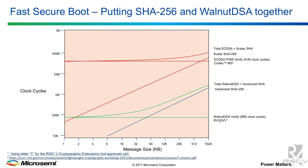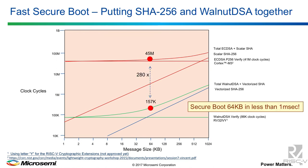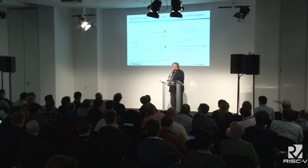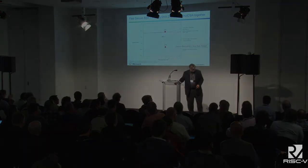Compared to a classical secure boot scenario, we can do the WalnutDSA signature in about 86,000 clock cycles. The SHA has been accelerated 36-to-one, which is the sloped line and is message-dependent. Compared to the usual approach — P256 signature verification taking 45 million clock cycles, with SHA also much slower — altogether we can do a 64K-byte chunk of data for secure boot in under one millisecond. Normally this would be about 280 times slower — about a quarter second — so we're taking it down to one millisecond. Big acceleration. Thank you.